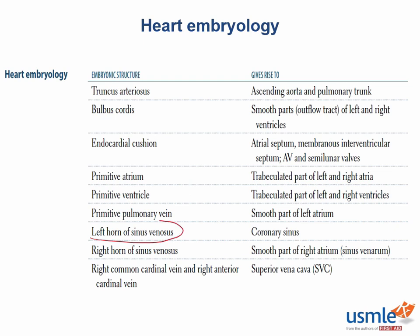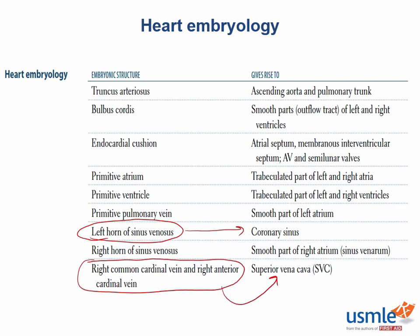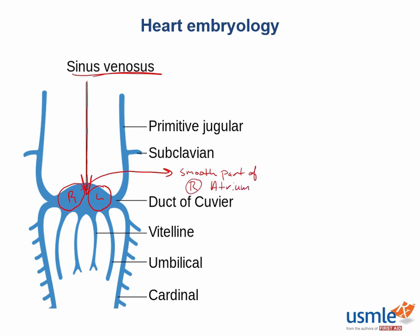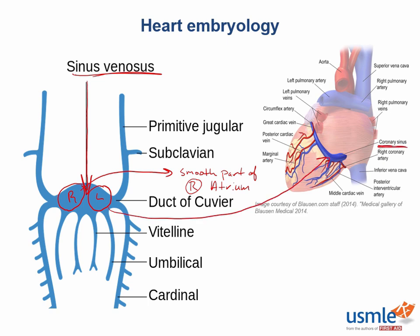Next, let's take a look at the left horn of the sinus venosus, as well as the right common cardinal vein and the right anterior cardinal vein. You can see here that the left horn of the sinus venosus becomes the coronary sinus, and the right common cardinal vein and the right anterior cardinal vein become the superior vena cava. This image represents the primitive veins of embryologic development. If we divide the sinus venosus in half, we have a right and left horn. The right horn becomes the smooth part of the right atrium, and the left horn of the sinus venosus becomes the coronary sinus, as you can see in this image.